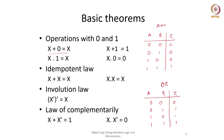Now, idempotent law — idempotent means if I am doing an operation with itself, what is the result? If I do an OR operation of X with X, meaning both inputs A and B are the same variable X: if both are 0, output is 0; if both are 1, output is 1. So X OR X equals X. Similarly, if I do an AND operation of a variable with itself, the output is again the same variable.